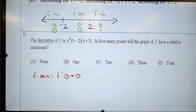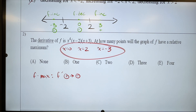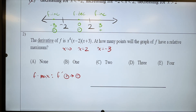Very quickly I can get x is equal to 0, x is equal to positive 2, and x is equal to negative 3. Those are all of my critical values. So if I'm graphing those on the number line — this is my x-axis — I have a zero, I have a negative three, and I have a positive two.